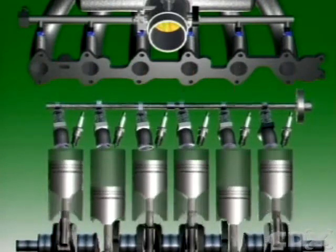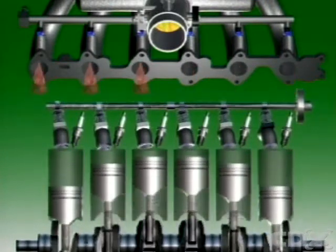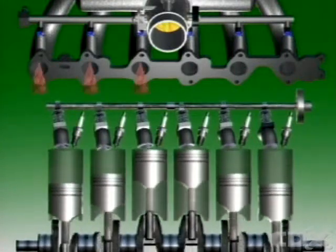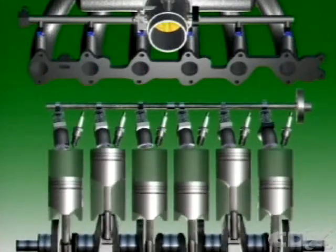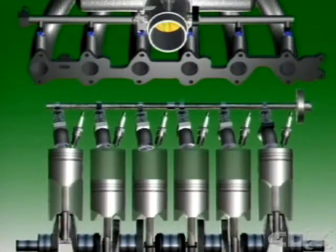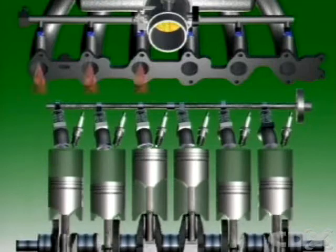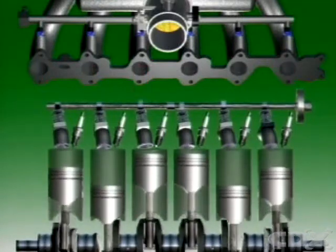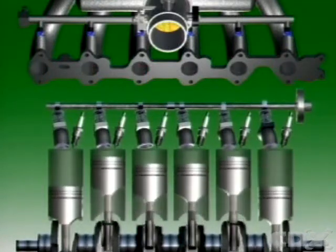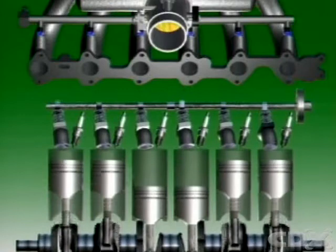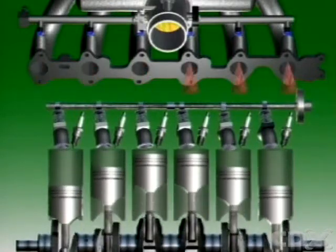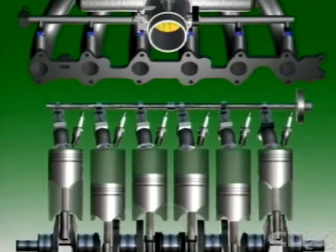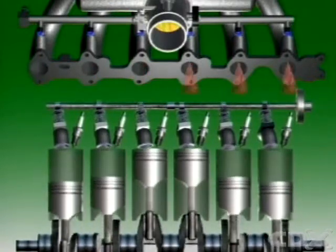Group 1 injects, then 360 degrees — or one crankshaft rotation later — so does Group 2. This happens regardless of the position of the intake valve. Just one injection provides the full quantity of fuel for each cylinder during that engine cycle.